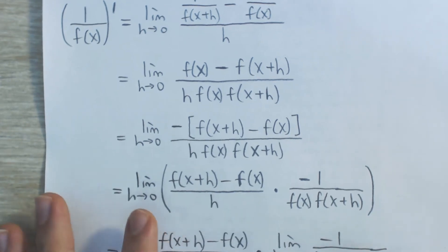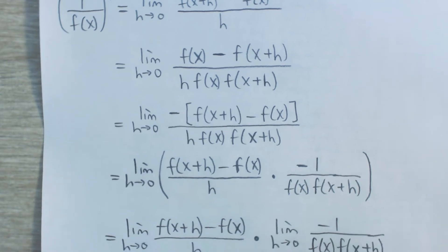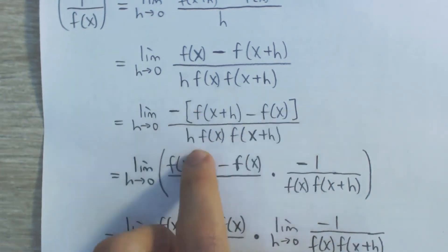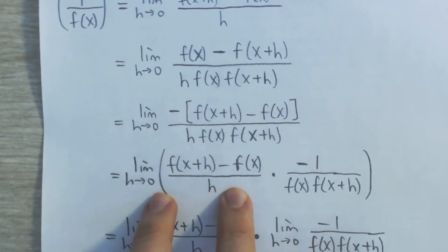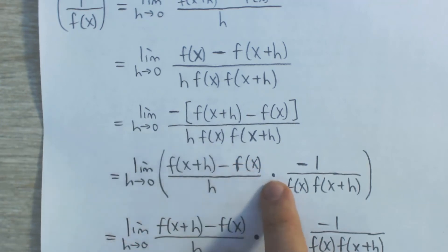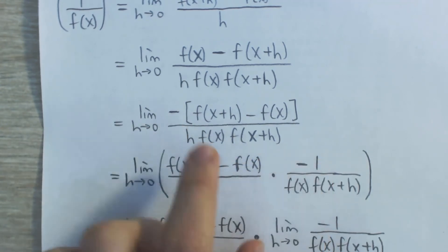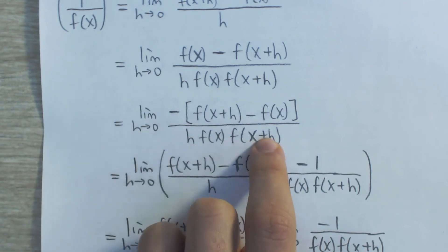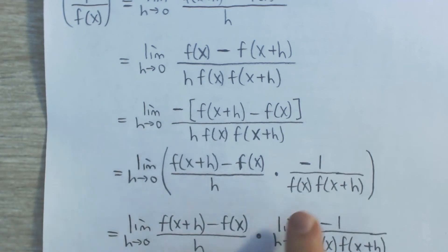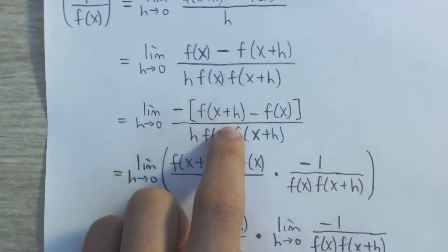So that's exactly what we're going to do: factor out the negative, then use the product rule for limits to split this up. We take f of x plus h minus f of x over h and bring it to one side — that's the derivative of f. What's left over is negative 1 in the numerator and f of x times f of x plus h in the denominator. If you multiplied these two fractions together, you'd get back the original expression.